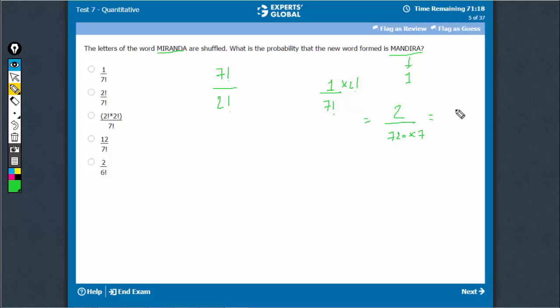This is 1 upon 2520. In fact, that is not needed. I am sorry. 2 factorial upon 7 factorial, that is enough. That's what I've done.